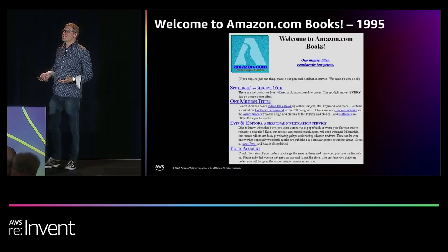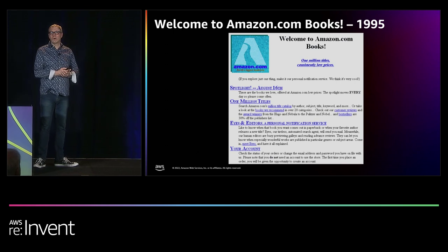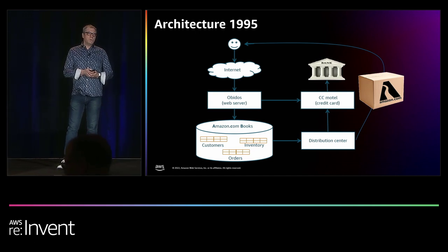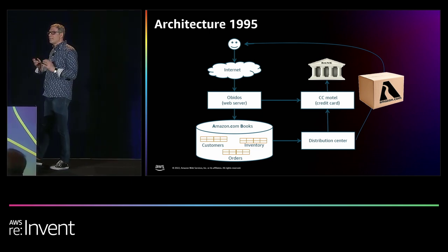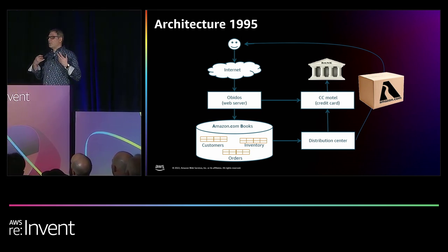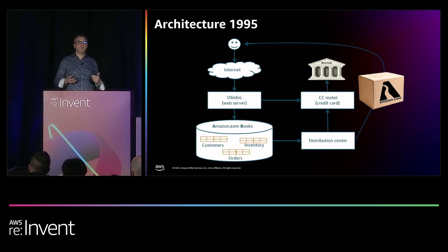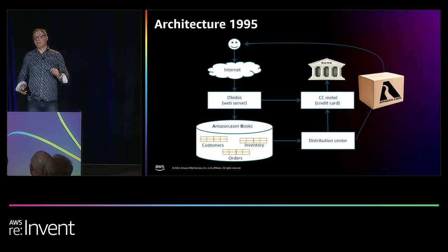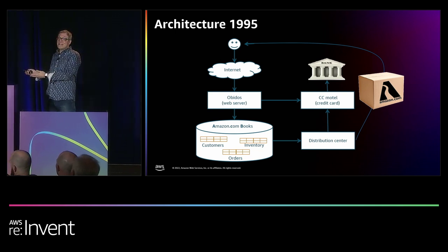I always like to start off with a bit of a history lesson. I wasn't there in 1995, but this is what the website looked like in 1995 — quite amazing for the time period. And this is the architecture used to run that website. I want to draw your attention to the box that says Obidos — the place in Brazil where the Amazon River is narrowest and swiftest. That is a single C binary running on a single server, talking to a single Oracle database on another server called ACB for Amazon.com Books, which had all the data in it.